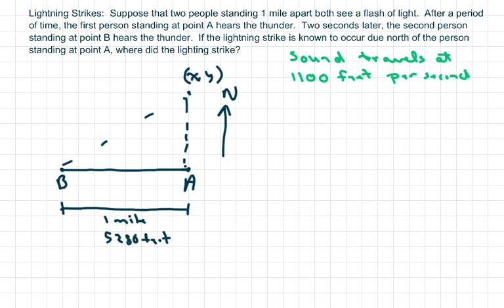Basically, we've got to find out where the lightning strikes. We want to note that all points where the strike could take place, such that the time difference would be the same, would form a hyperbola with A and B as the foci. So I made this little diagram, and the ordered pair X, Y represents the location of the lightning strike.